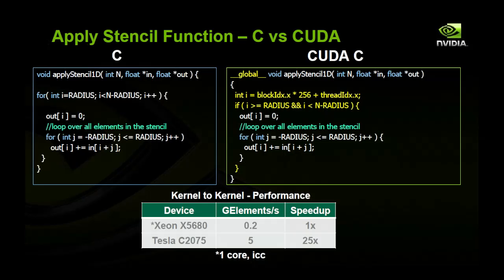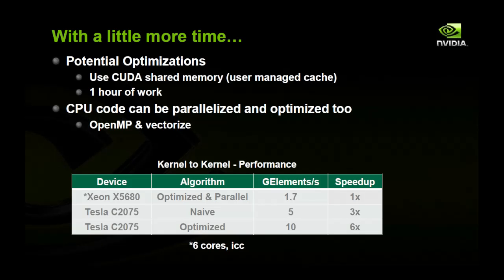So we do this, and we see a kernel-to-kernel performance speedup of about 25x on our Tesla C2075. This is versus a single core compiled with ICC. If you have a little more time, there's a number of potential optimizations that you can make. One is that you can use CUDA shared memory, which we like to think of as a user-managed cache. It takes about an hour of work. And if you do this, you get a large performance increase over the initial naive implementation, about a factor of two. In addition, we can also take the original CPU code that we have, and we can paralyze it with OpenMP, and we can add vectorization parameters in order to get more performance out of it. And if we do that, we get about 1.7 giga elements on the CPU code. So in total, once we have the full optimized parallel CPU version compared to the optimized GPU version, we get about a 6x total speedup.